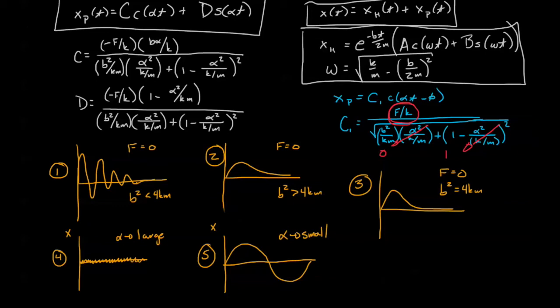Now, thus far, we've been very careful to keep the homogenous solution and the particular solution completely separate. For instance, numbers one, numbers two, and number three, we're only looking at the homogenous solution. Then, for number four and number five, we're looking at the steady state or the particular solution.